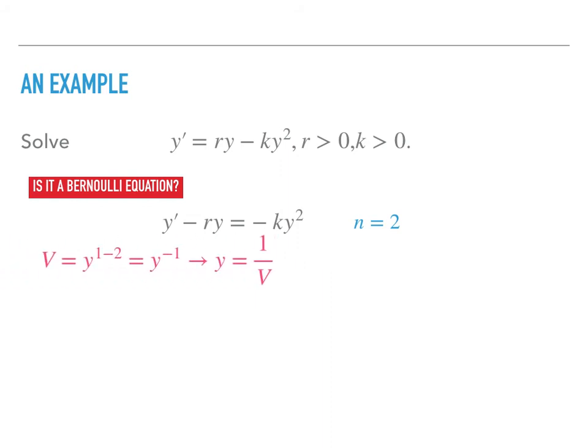Then you can use the formula from the previous slide in order to follow the process. Let v equals y raised to 1 minus n, which is 1 minus 2, and then you can solve for y here. Then you will have a new equation in terms of v: v prime 1 over 1 minus 2 plus negative r times v equals negative k. And then you can simplify it and then do another simplification step in order to get a nice first-order linear differential equation in terms of v and t.